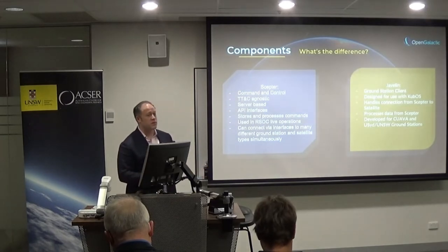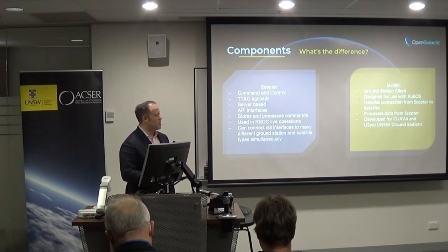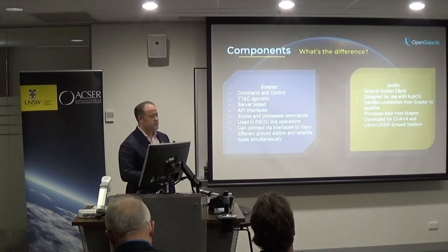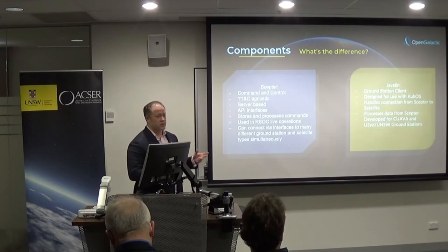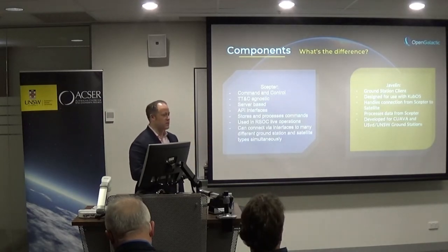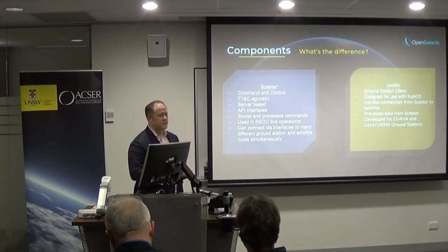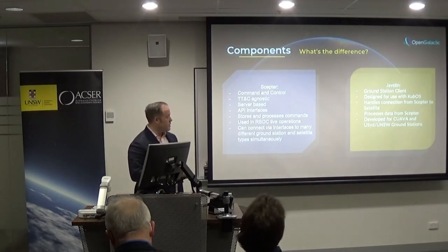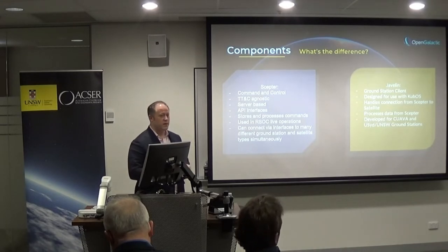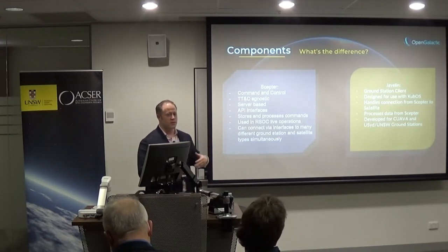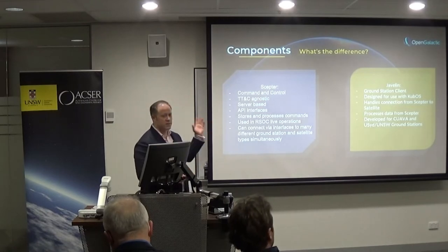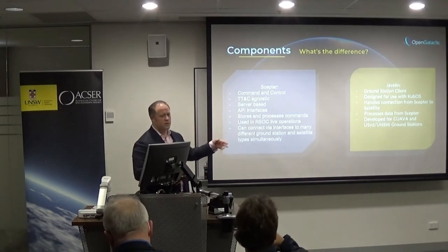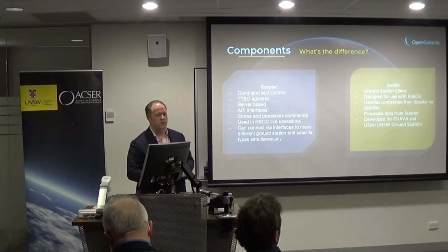We have two main components for the workbench. Scepter is command and control — it handles tracking, telemetry, and command. It's server-based with API interfaces, and we're using it in the RSOC based on cloud services. We can provide abstracted interfaces to connect with a number of different services. Javelin is a ground station client and is more an example of how to do it. If you're using something other than the hardware it was designed for, you can use it as inspiration to write your own client, connect it to Scepter, and you can explore the database and be easily onboarded into the RSOC.